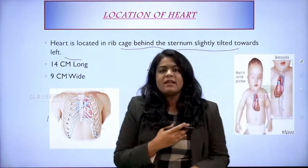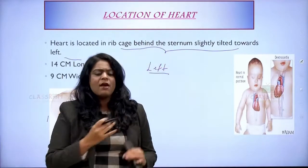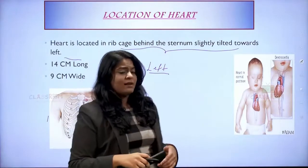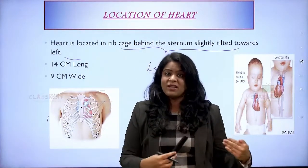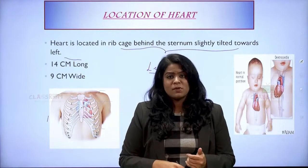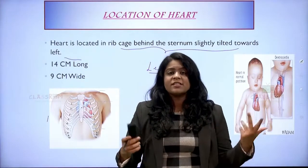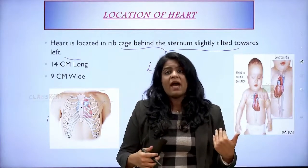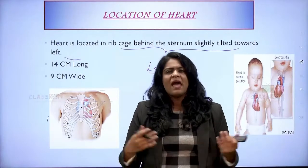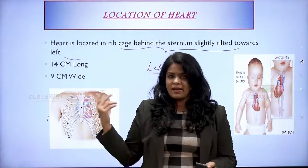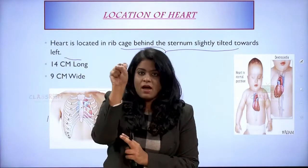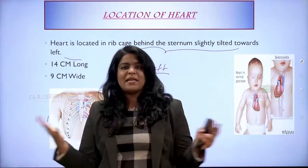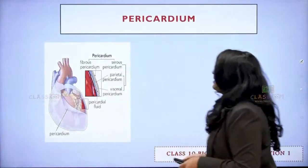There is a disorder where the heart can be on the right side, not on the left side. That rare genetic disorder is called dextrocardia, where the person has the heart on the right side. Coming to the size of the heart, you can imagine it as the size of your fist — it's just so small yet it does so many functions.